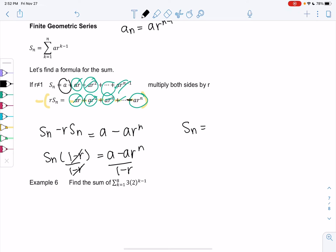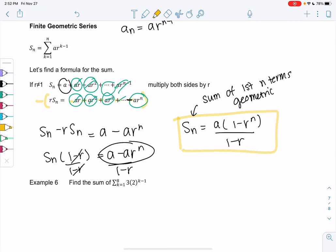So the sum of the first n terms, S_n, and this is for geometric. There's a different formula for arithmetic. And if it's neither of these, then we just have to add. But these are shortcut formulas for these patterns. It equals a times 1 minus r to the n all over 1 minus r.